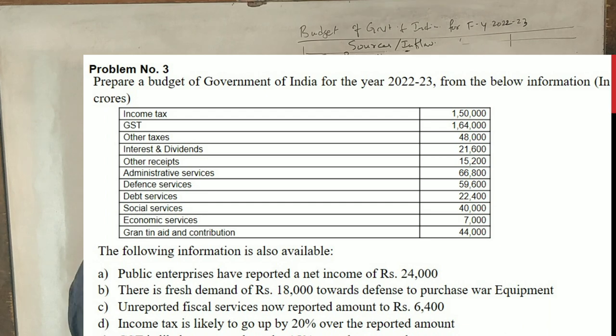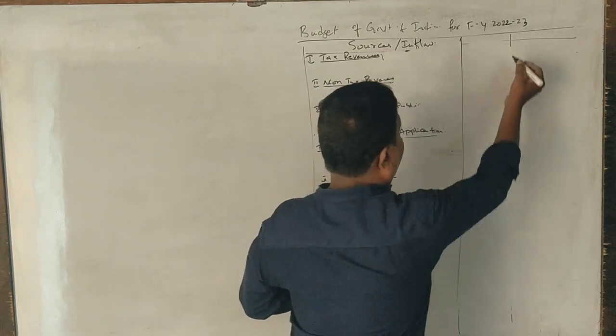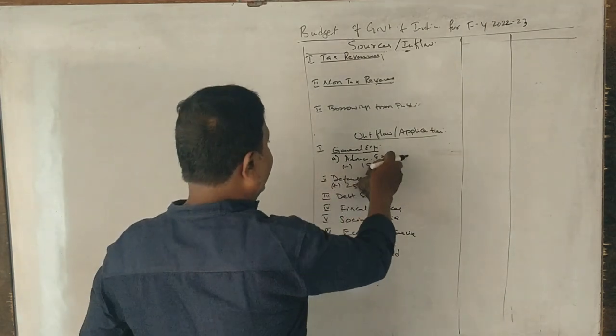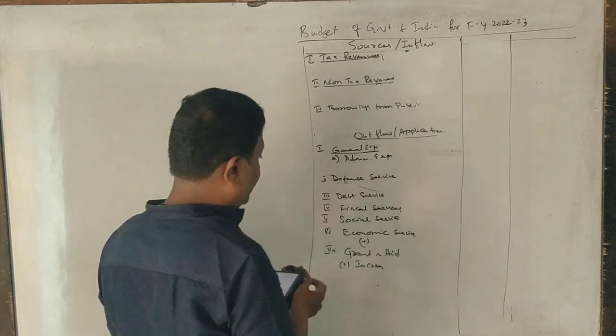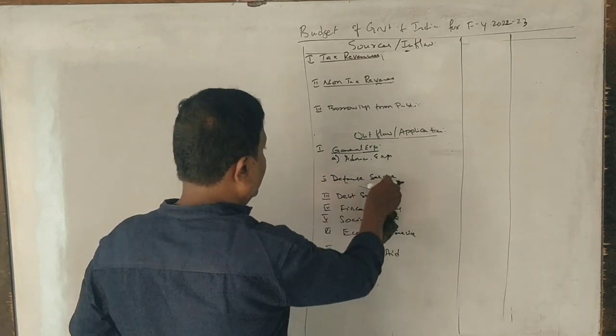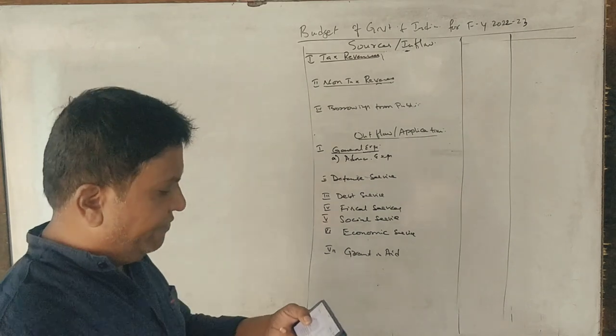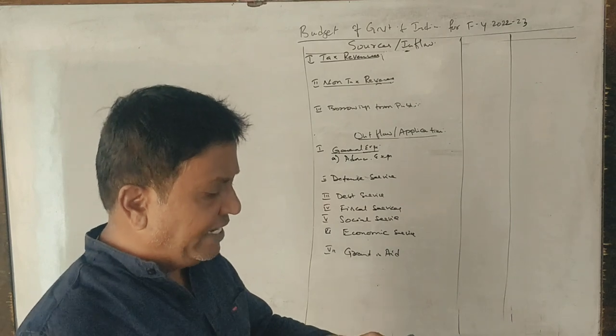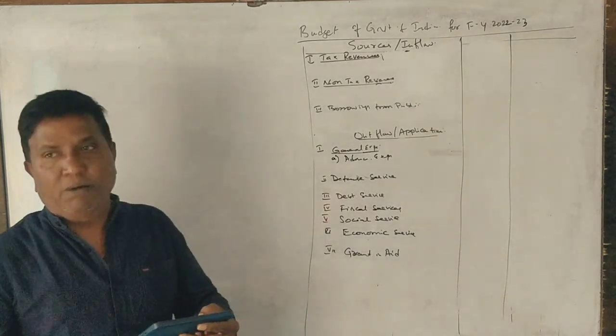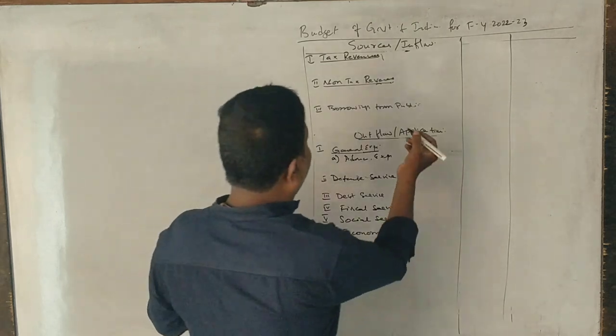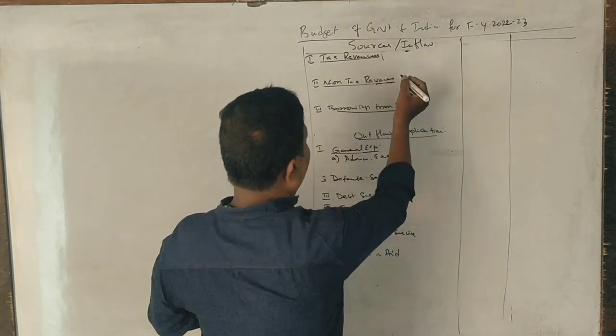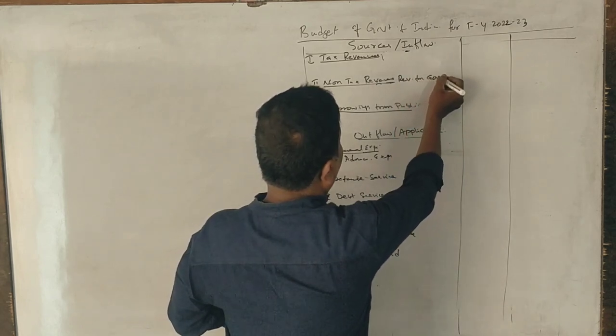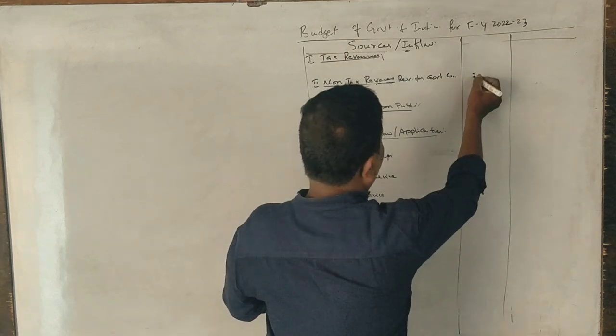What is the first adjustment? Public enterprises have reported a net income of 24,000. There is non-tax revenue from government company of 24,000.